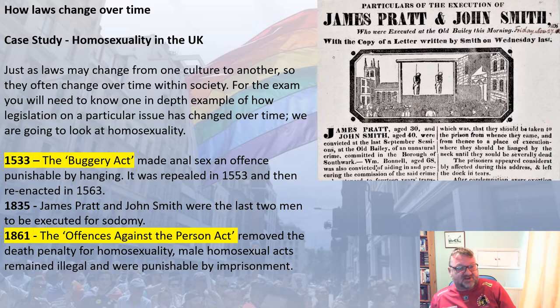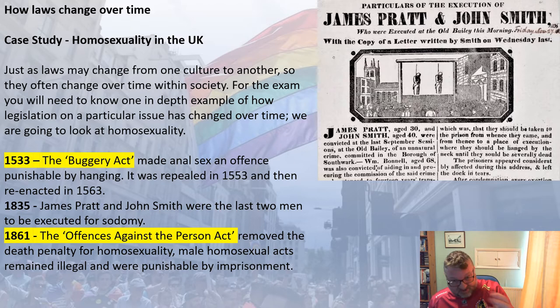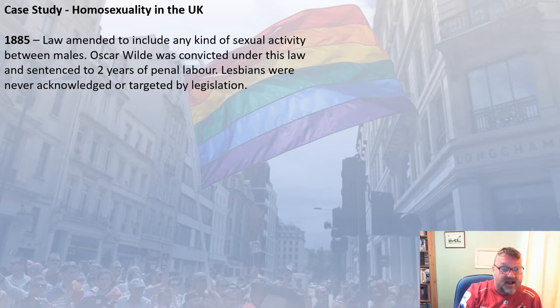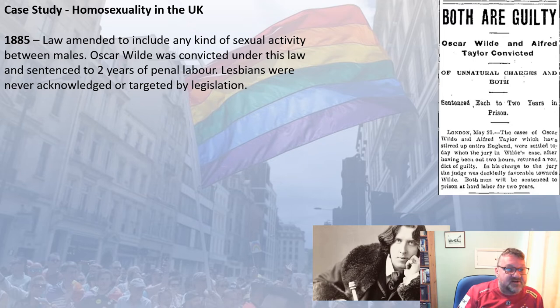The next key event is 1861, when the Offences Against the Persons Act removed the death penalty for homosexuality. Male homosexual acts remained illegal, but the punishment became imprisonment rather than death. Then in 1885, the law was amended to include any kind of sexual activity — not just anal sex under the Buggery Act, but even kissing and holding hands. The famous Victorian playwright Oscar Wilde was convicted under this law for kissing another man and was sentenced to two years' hard labour. Notably, lesbianism was seen as perfectly acceptable and was not illegal.